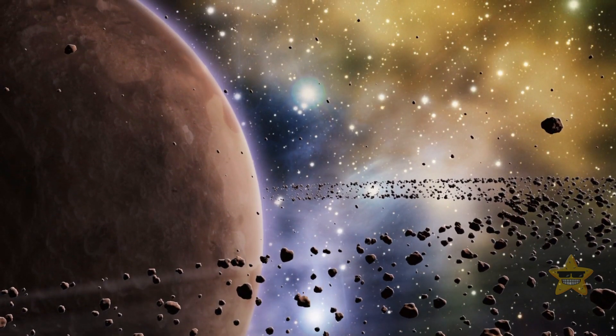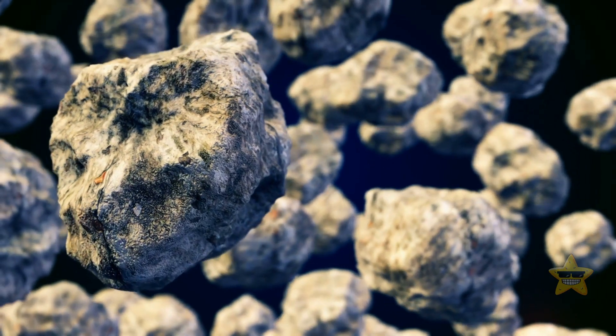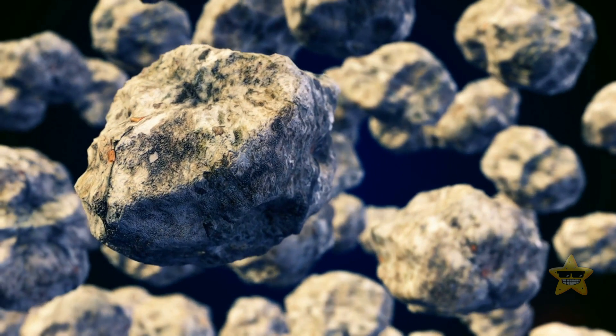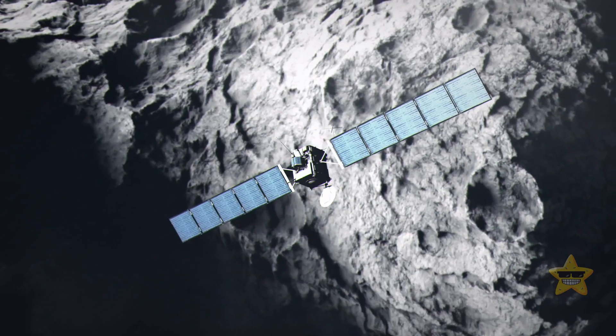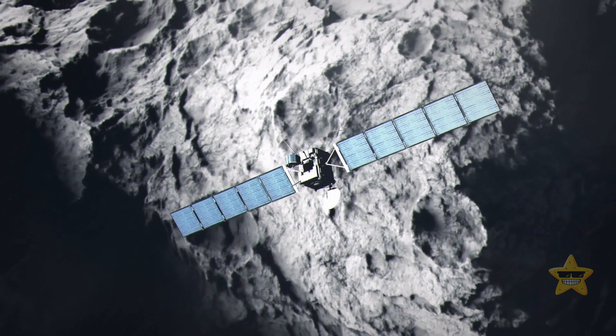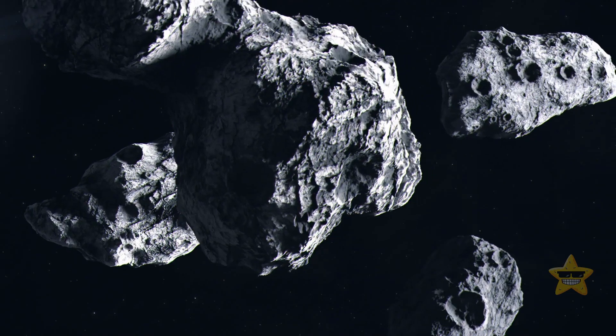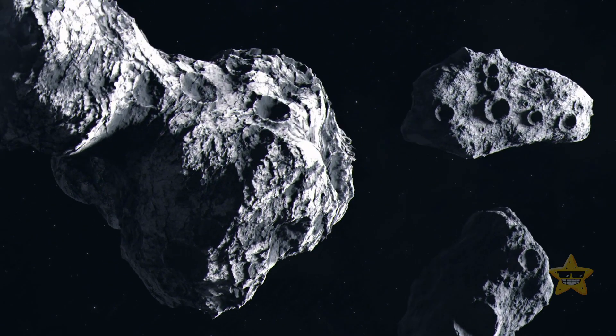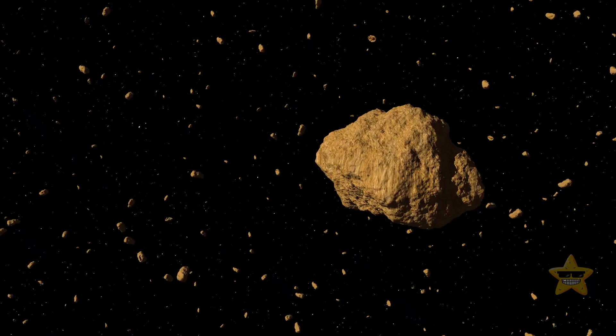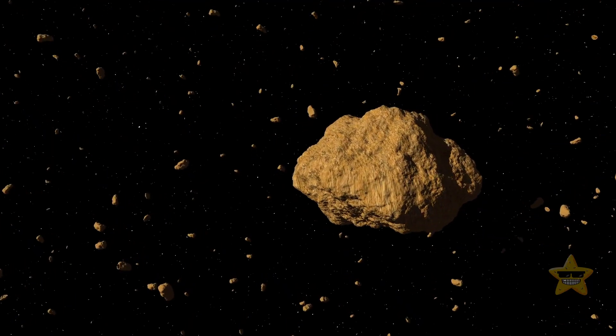They're mainly found in the asteroid belt between the orbits of Mars and Jupiter. Asteroids can be very different in size, from tiny dust particles and modestly sized boulders to huge bodies reaching 600 miles across.